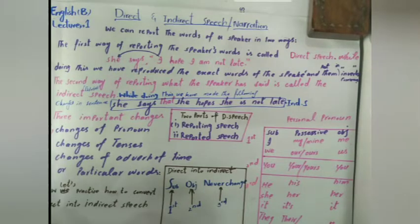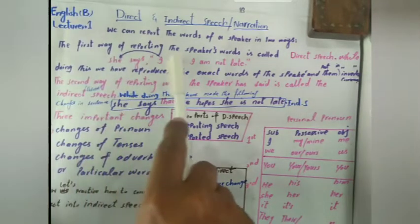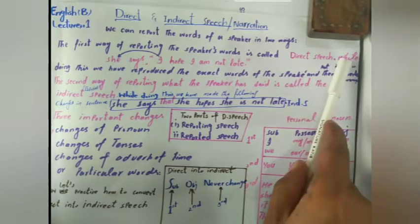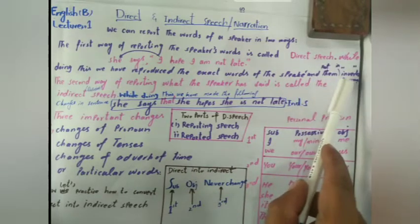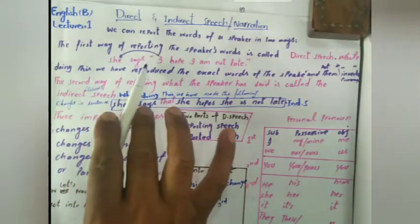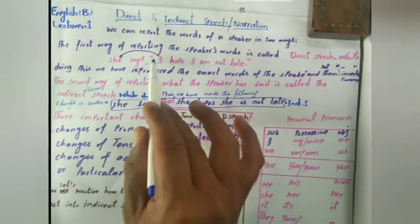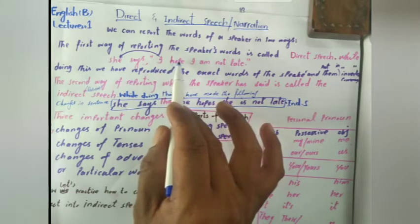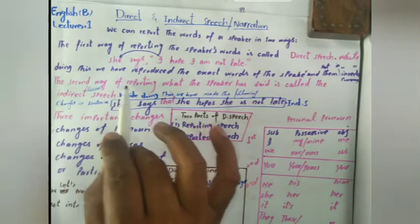The topic of this lecture is direct and indirect speech. We can report the words of a speaker in two ways. The first way is called direct speech. While doing this, we reproduce the exact words of the speaker and put them in inverted commas. For example: she says, 'I hope I am not late.' These are called reported speech and reporting speech.